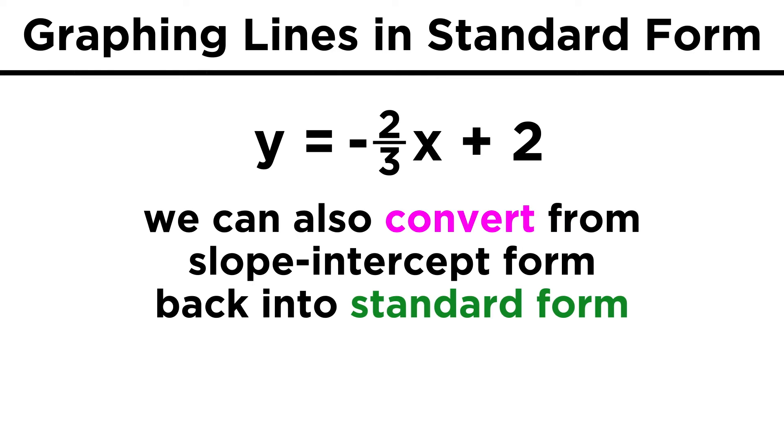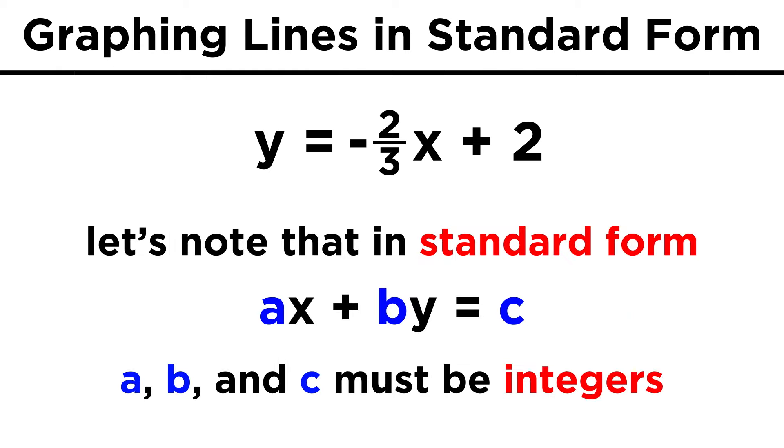We could also go in reverse, from slope-intercept to standard form. To do this, we should note that in standard form, a, b, and c must be integers, they can't be fractions.